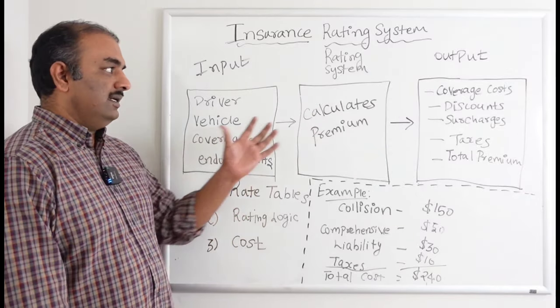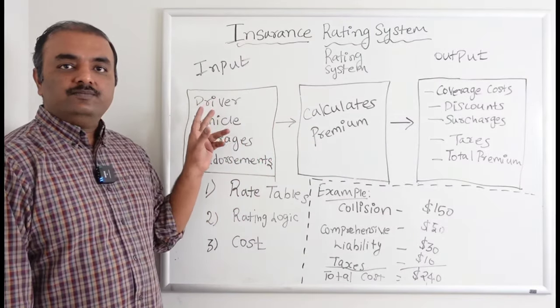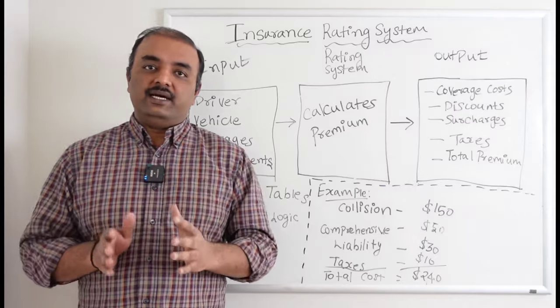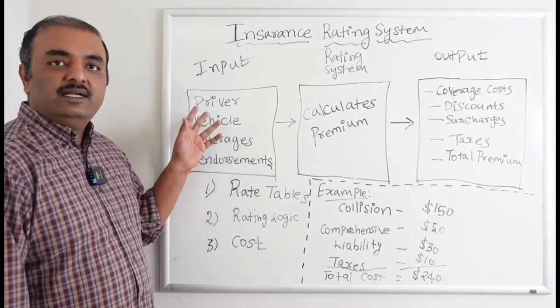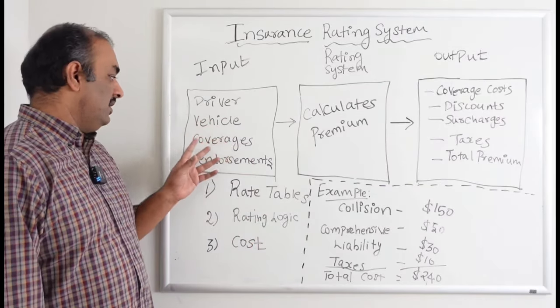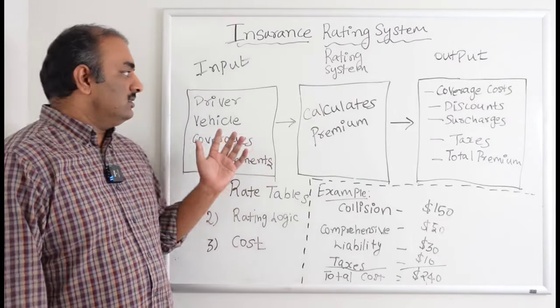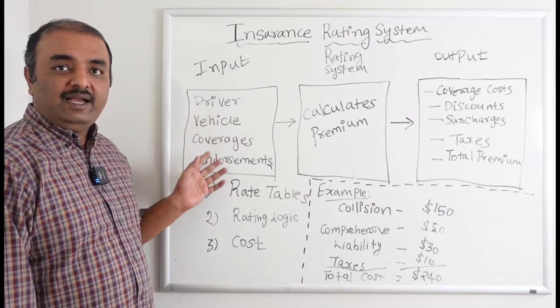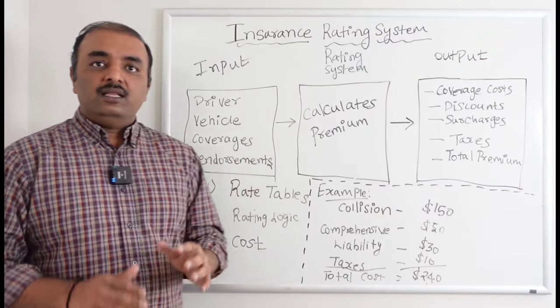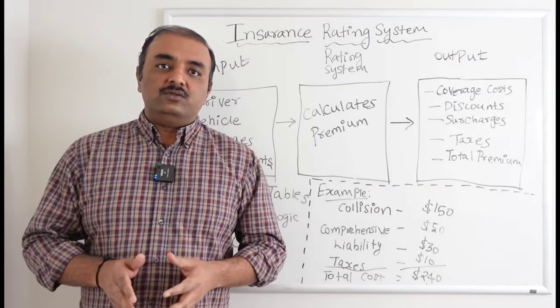If you see this diagram, the moment a customer goes to the insurance carrier, they collect all the critical details like drivers, vehicles, coverages, endorsements, and during the quoting process they pass all those premium-bearing attributes to the rating system. The rating system is a standalone system that is going to come up with the premium.